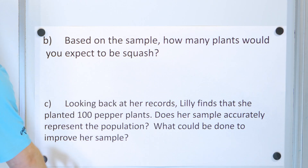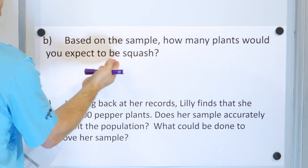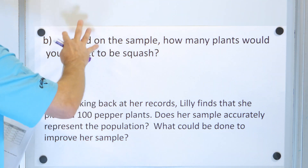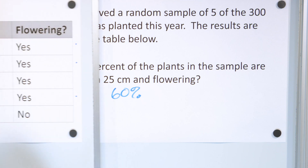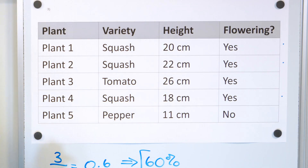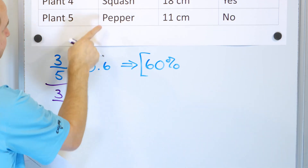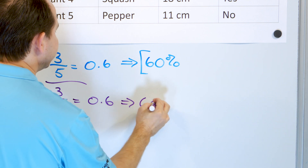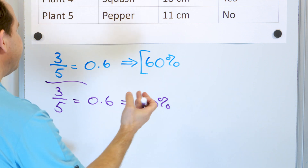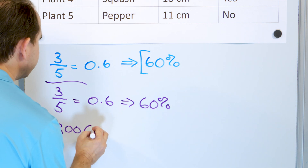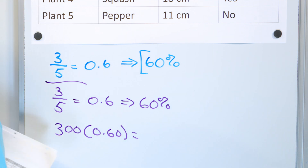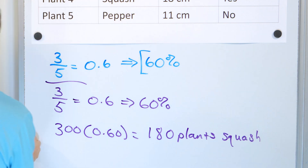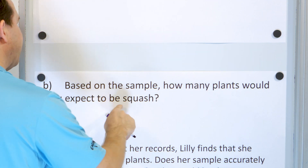Problem two: based on the sample, how many plants would you expect to be squash? In the sample, there are three squash plants out of five total. That's three-fifths, which is 0.6, or 60%. Applying that to the full population of 300 plants: 300 times 0.60 equals 180 plants. We would expect 180 squash plants in the entire population.